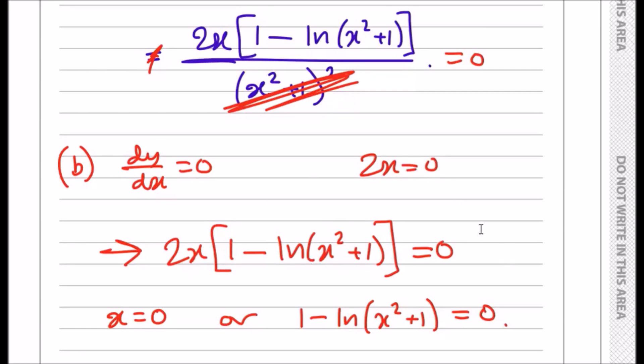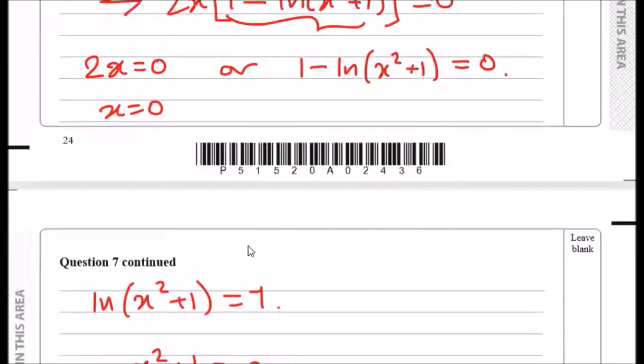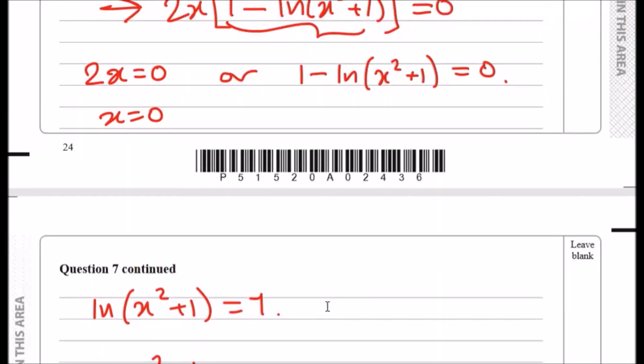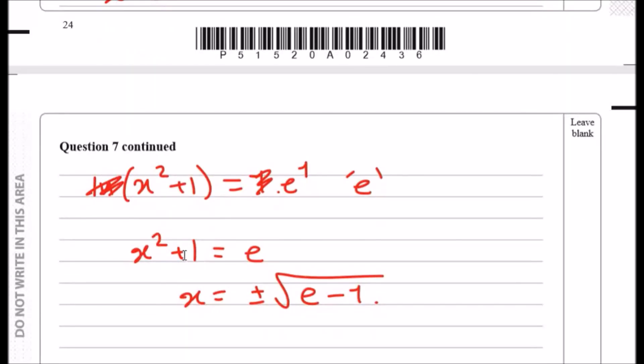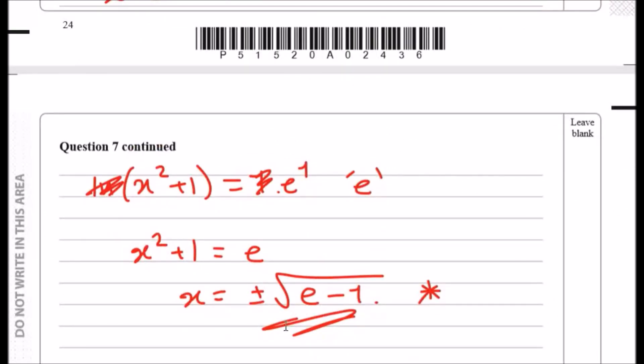The second solution would be this function here: 2x times one minus ln of x squared plus one equals zero. This means that the first solution, x is zero. For this function here, you can rearrange to make the natural log the subject and solve. To get rid of the natural log, you need to take exponential both sides. This raises it to the power one, and e to power one is just e. Then to find x, minus one across and square root. And when you square root, always keep the plus minus result, because this is the kind of bit where you can literally drop a mark.